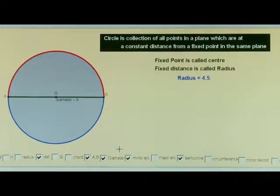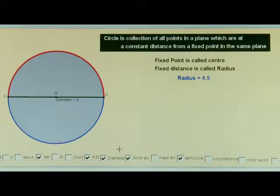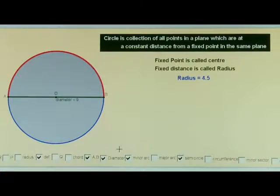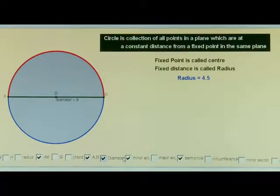A semicircle is exactly half part of the circle. Half part of the circle means the half arc made by the diameter, which is known as a semicircle. The diameter divides the circle into two equal arcs, each of which is known as a semicircle.